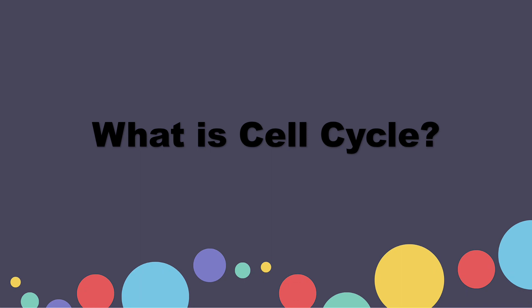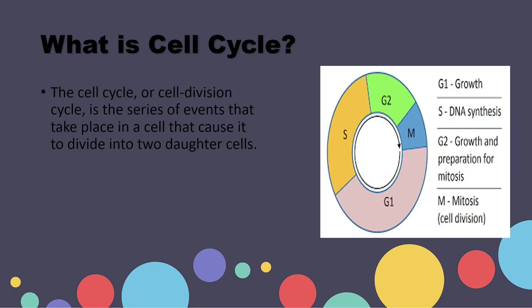What is the cell cycle? The cell cycle, or cell division cycle, is the series of events that take place in a cell that causes it to divide into two daughter cells.